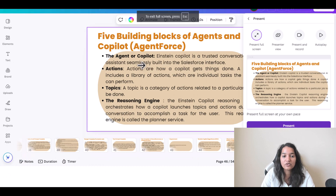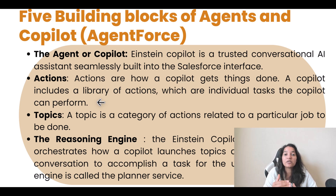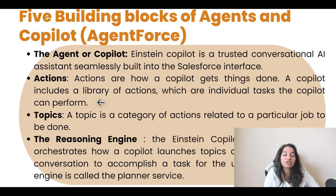Actions are how a Copilot gets things done. A Copilot includes a library of actions which are individual tasks it can perform - fetching a record, summarizing information, creating a draft email. A Topic is a category of actions related to a particular job to be done. For example, you could create a topic called Billing that will only address questions related to billing, and another topic for Sales that covers everything related to sales. You can create multiple topics under your Einstein Copilot, with multiple actions tied to each topic.